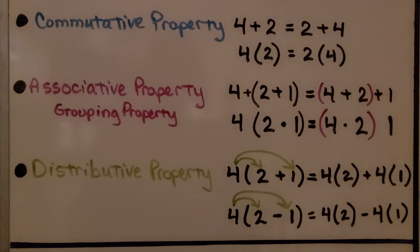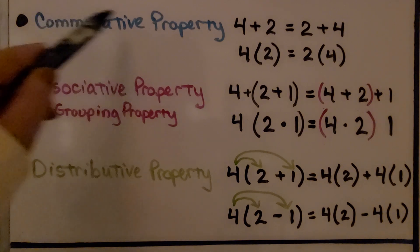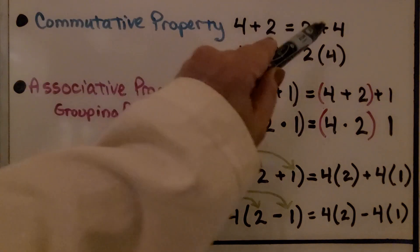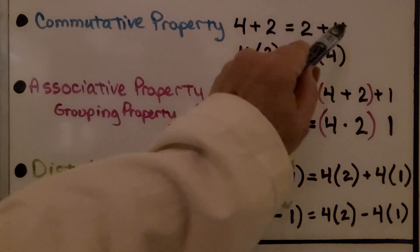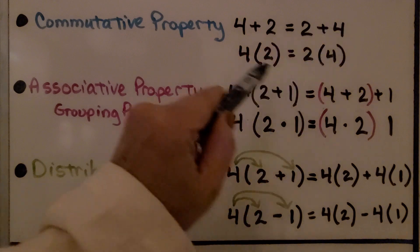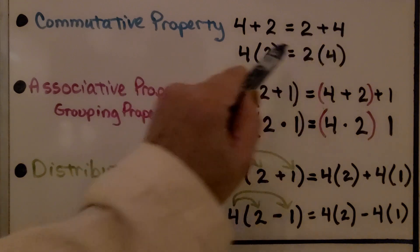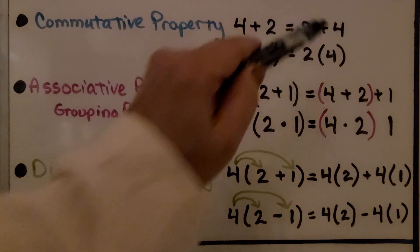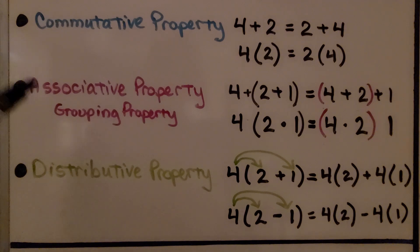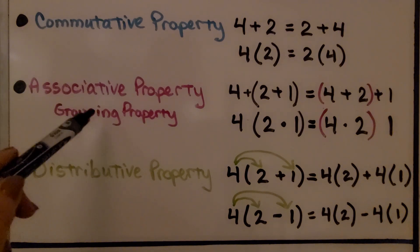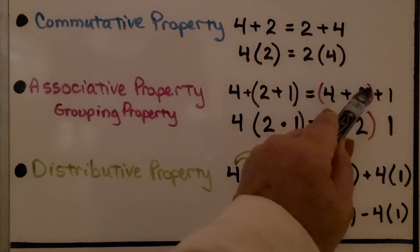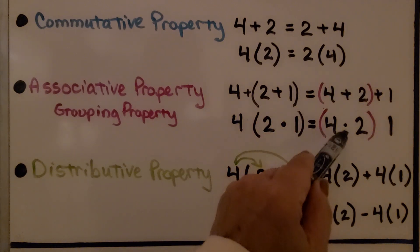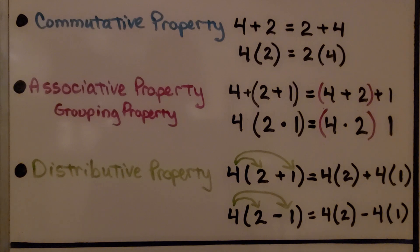We're going to begin with a quick review of some properties. The commutative property says that we can switch the order — in addition, we change the order of the addends; in multiplication, we can change the order of the factors and get the same answer. The associative property, known as the grouping property, says we can regroup numbers in addition or multiplication and still get the same answer.